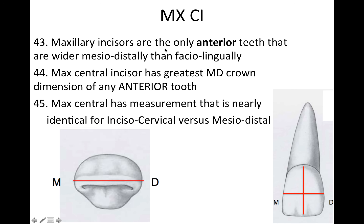Maxillary incisors are the only anterior teeth that are wider mesiodistally than faciolingually. Maxillary central incisors have the greatest mesiodistal crown dimension of any anterior tooth. Be very careful on the test — pay close attention to whether they're asking about anterior teeth, posterior teeth, or every tooth in the mouth.